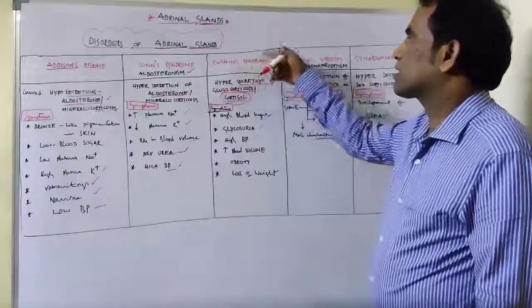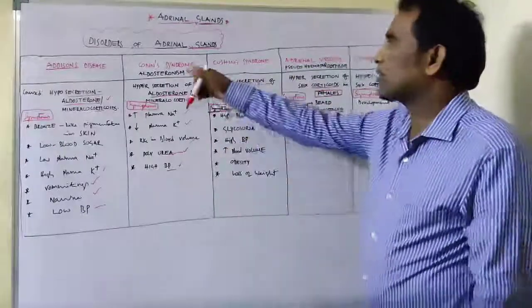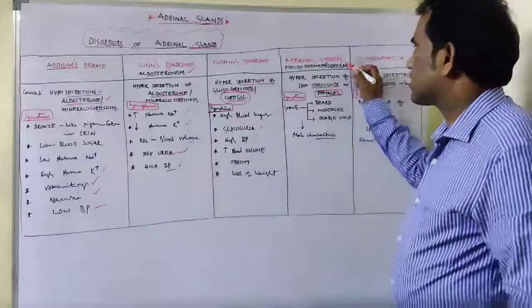It is called Cushing syndrome because Cushing is the name of the scientist who studied this, so it is named after him. Similarly with Conn's syndrome.